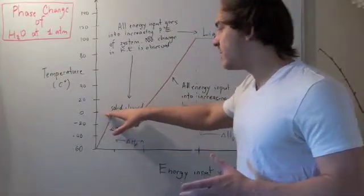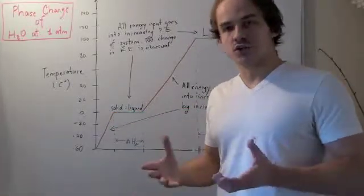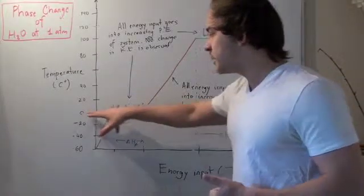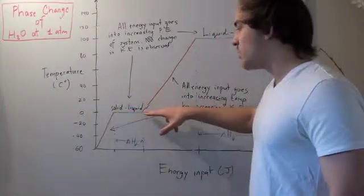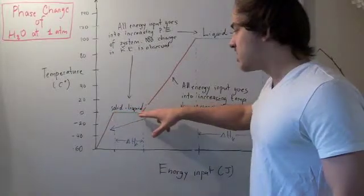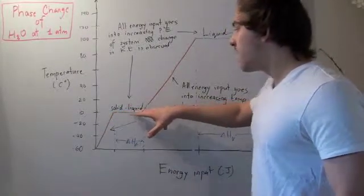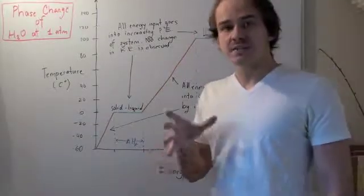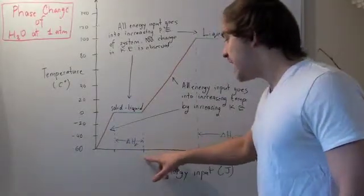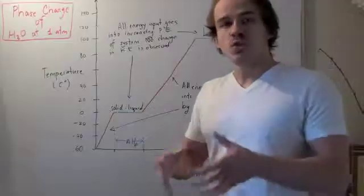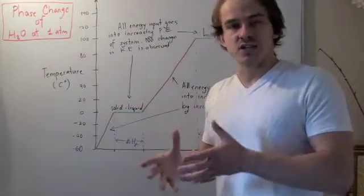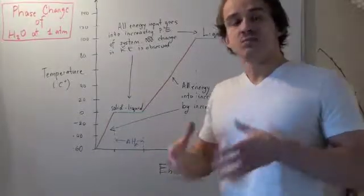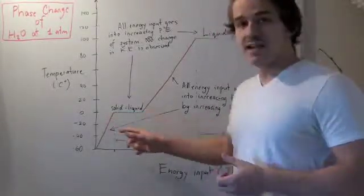Now when we get to zero degrees Celsius, a phase change occurs. Solid becomes a liquid. The change in temperature is zero, so the slope is zero. From this point to this point, the temperature is the same. It's zero degrees Celsius. That's because all the energy input goes into increasing potential energy of our substance, and potential energy increase is what causes the change in phase.